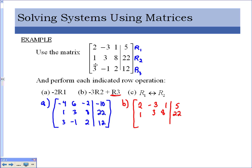We need to find negative 3 times row 2: 1 times negative 3 is negative 3, 3 times negative 3 is negative 9, 8 times negative 3 is negative 24, and 22 times negative 3 is negative 66. Adding these to the values in row 3: negative 3 plus 3 is 0, negative 9 plus negative 1 is negative 10, negative 24 plus 2 is negative 22, and negative 66 plus 12 is negative 54. Note: I went back to the original matrix, not the answer from Part A.